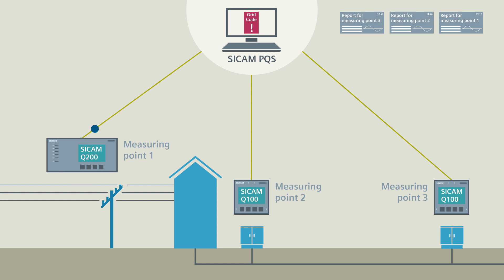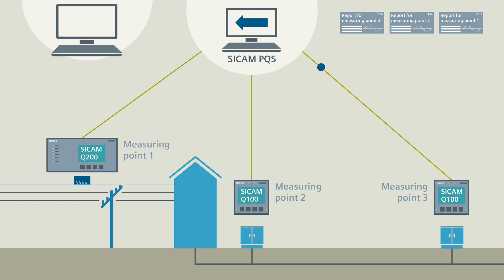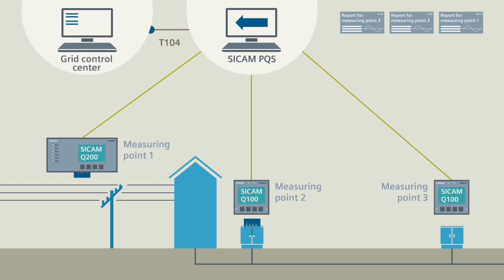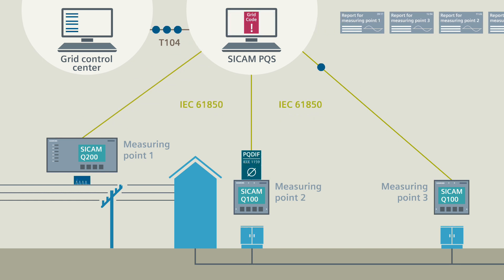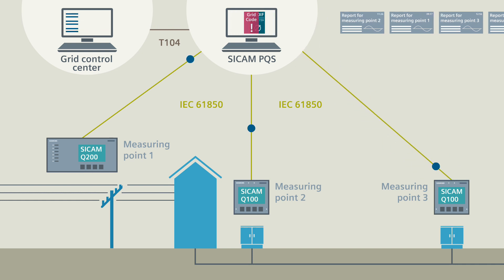By the way, the individual operating values acquired in the power quality devices are not suitable for power quality evaluation. However, you can use them to visualize current operating states on the grid control center. For this, the operating values are transmitted with the PQDIF files via IEC 61850 on the same communication line.